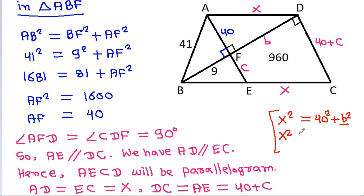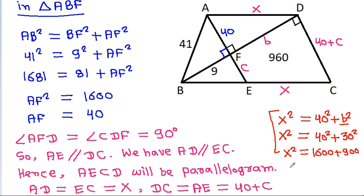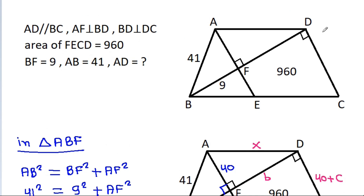So X squared will be equal to 40 squared plus B squared, which is 30 squared. X squared equals 1600 plus 900. So X will be equal to 50. Therefore AD is 50.